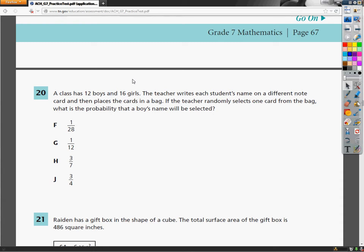Seventh grade TCAP practice test, the math section, this is question number 20. A class has 12 boys and 16 girls. The teacher writes each student's name on a different note card and then places the cards in a bag. If the teacher randomly selects one card from the bag, what is the probability that a boy's name will be selected?